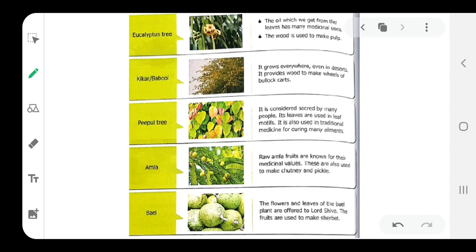Next is eucalyptus tree. The oil we get from the leaves of this tree has many medicinal uses. The wood is used to make pulp, and the oil has many medicinal uses.